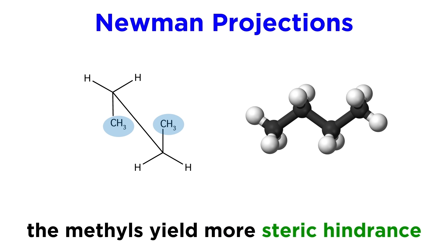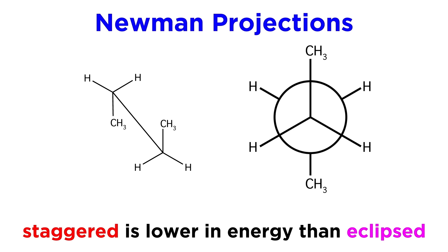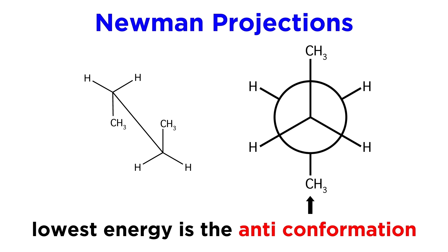These methyl groups yield more steric hindrance than hydrogens do. This term refers to the repulsion between groups, whether on the same molecule or two different molecules, and it becomes more significant as these groups get larger. For this reason, with butane it will still be the case that staggered conformations are lower in energy than eclipsed conformations,